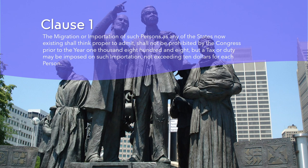The clause was rendered obsolete by the passage of the Act prohibiting the importation of slaves in 1807, which banned the importation of enslaved people into the United States starting January 1st, 1808. The Act was one of the first federal laws to regulate slavery and was supported by both Northern and Southern statesmen who saw it as a way to limit the expansion of slavery and reduce its political influence. However, the Act did not end slavery itself, nor did it stop the illegal smuggling of enslaved people into the country. Slavery would continue to exist and divide the nation until the Civil War and the ratification of the 13th Amendment in 1865.